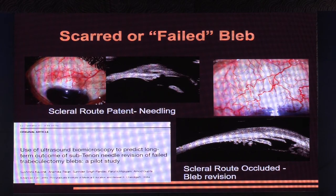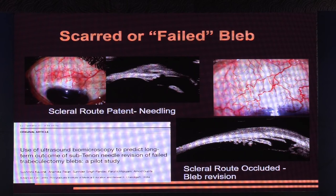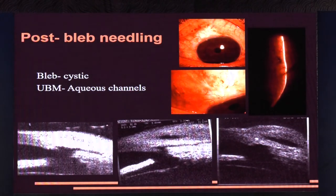For scarred or failed blebs beyond six weeks or three months, we studied blebs with UBM and coined the term 'scleral root patent' and 'occluded.' Half work well because if you do sub-tenon needling and the scleral root is occluded, you won't achieve much — those require bleb revision. Cases with a patent scleral root under the sclerostomy are the ones that do well with needling. Post-op bleb needling with a patent scleral root can successfully restore the bleb.